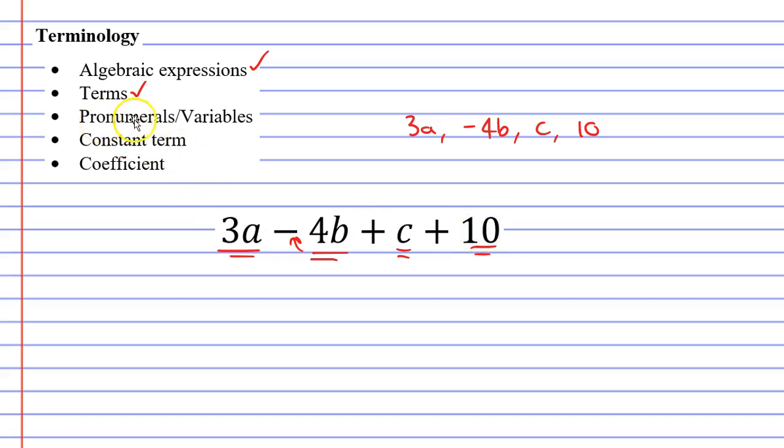We already mentioned before what pronumerals and variables are. Looking at our algebraic expression below, our pronumerals or variables are the letters a, b, and c.